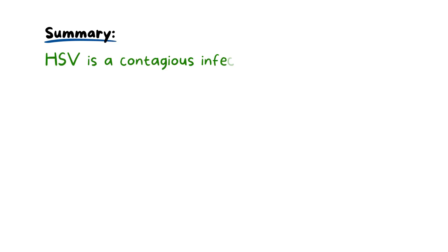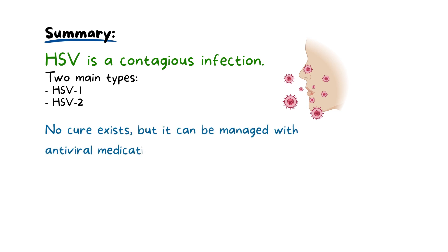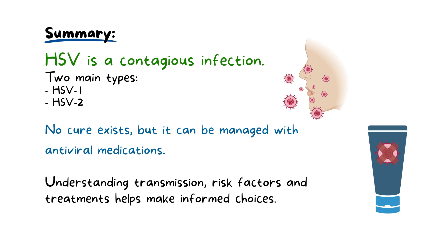To summarize, HSV is a contagious infection with two main types — HSV-1 and HSV-2 — impacting oral and genital regions respectively. While no cure exists, medical interventions like antiviral medications effectively manage symptoms and outbreaks. Understanding the virus, transmission risk factors, and available treatments empowers patients and individuals to make informed decisions for their well-being.